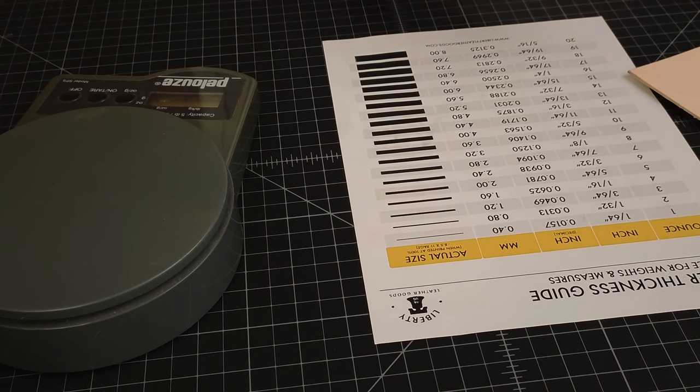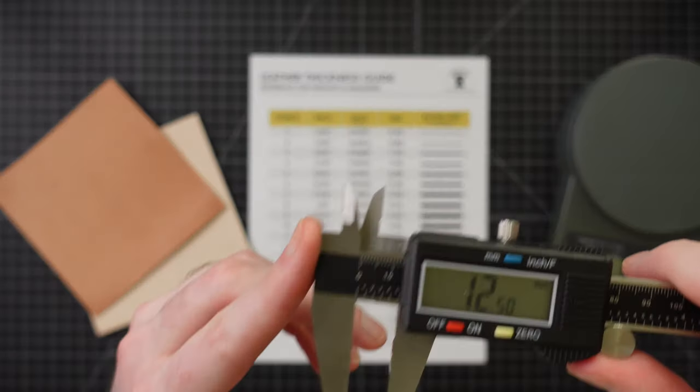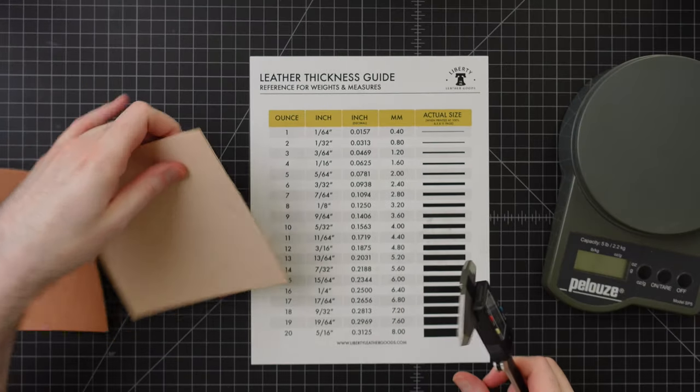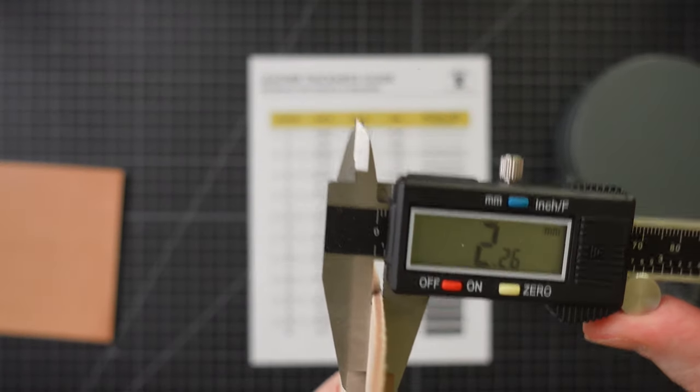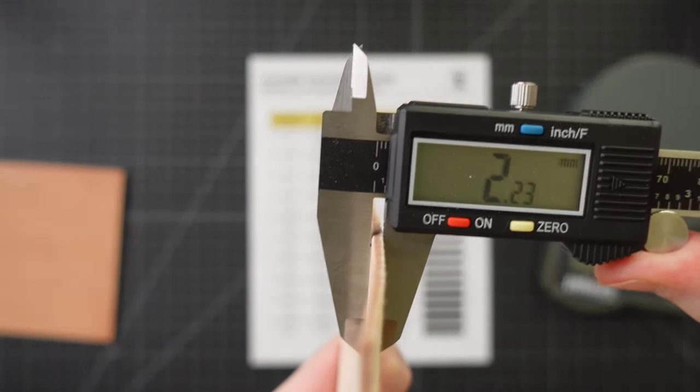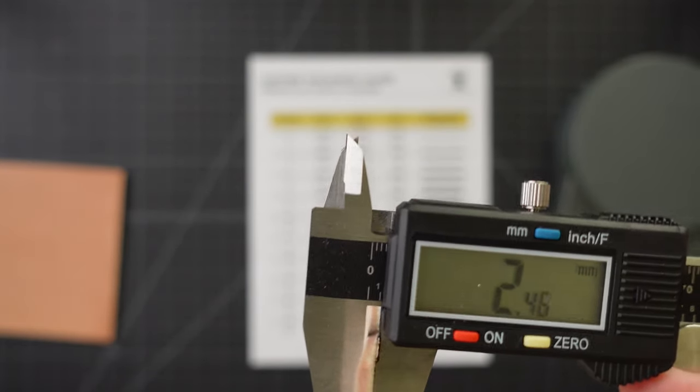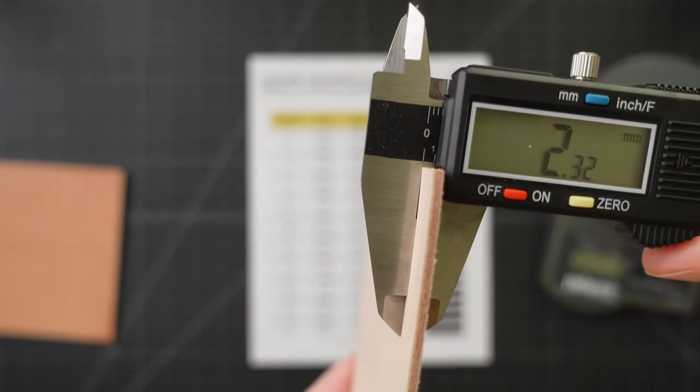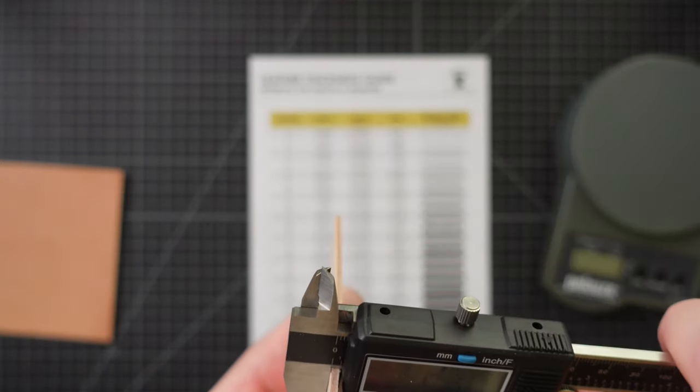So first, we're going to check with the caliper, which is a digital measuring device that'll give us an LED readout of the specific thickness of this leather. Let's check that out here. Got around 2.23 over there, 2.4 over there. And again, the hides are going to vary. So we're just going to look around 2.3. We've got around 2.3, 2.4. So we'll say around 2.4.